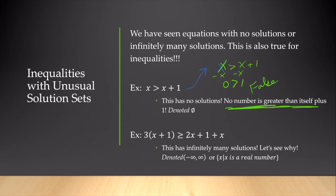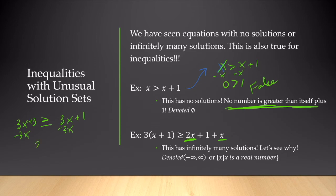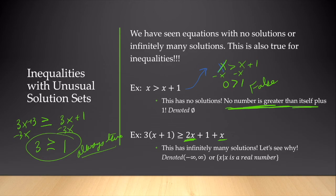In the second example, I have 3 times the quantity x plus 1 is greater than or equal to 2x plus 1 plus x. Distributing gives 3x plus 3 is greater than or equal to 3x plus 1. Subtracting 3x from both sides gives 3 is greater than or equal to 1, which is always true. So this inequality has infinitely many solutions — every point on the number line — written as negative infinity to infinity in interval notation, or x such that x is a real number in set-builder notation.